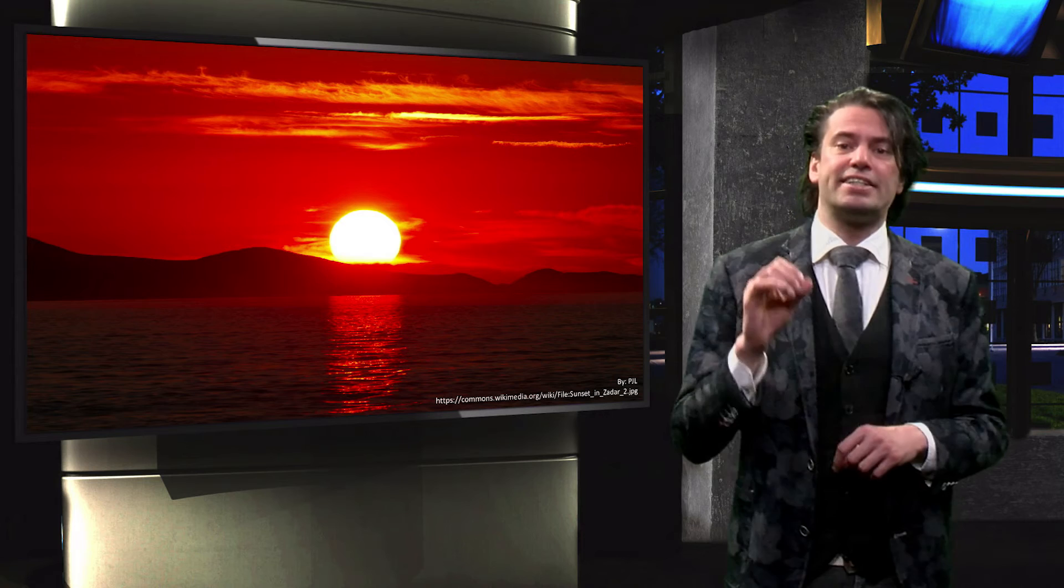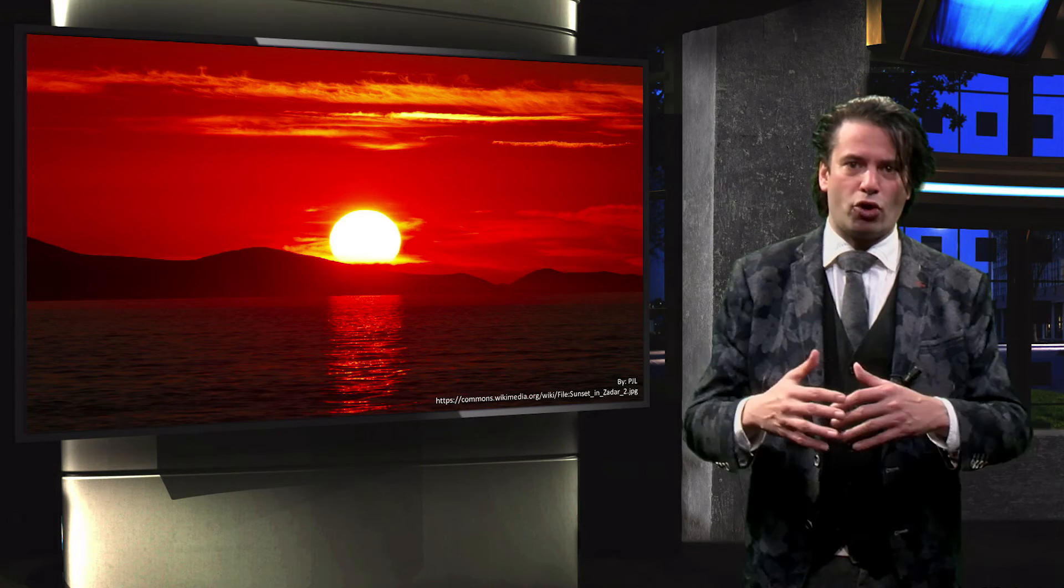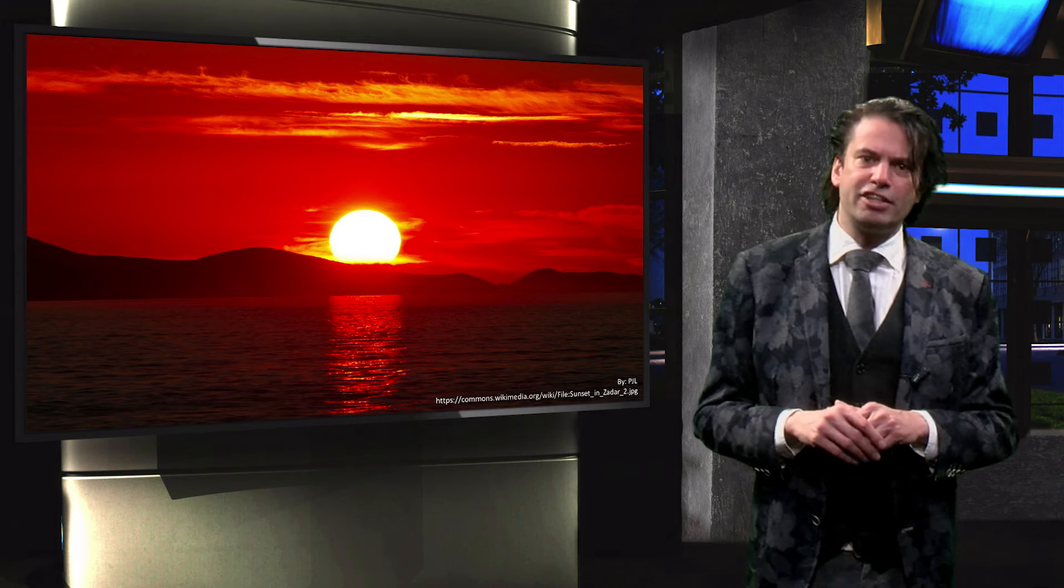With every scattering event, the intensity of light is distributed. Therefore, many Rayleigh scattering events cause the blue light from the Sun to be fully scattered. The intensity of the blue light reaching our eyes is therefore so low that it is no longer observable.